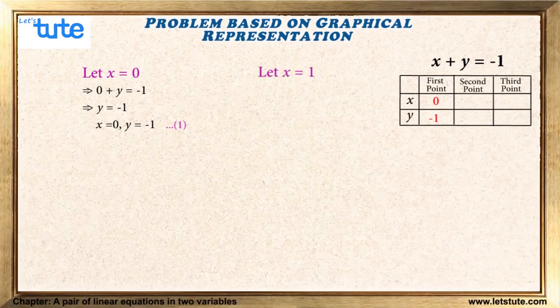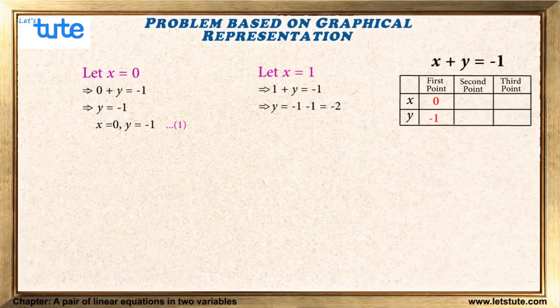For the second point, let x equal 1 and substitute in the equation x plus y equals minus 1. We get 1 plus y equals minus 1, so y equals minus 1 minus 1, which equals minus 2. Second point: when x equals 1, y equals minus 2.